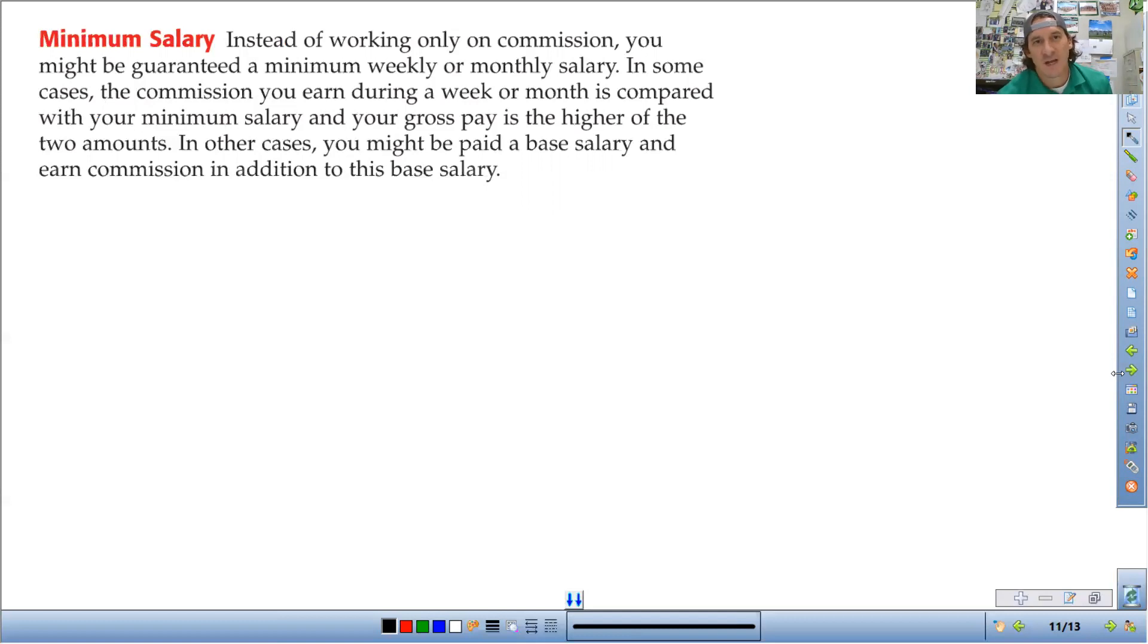All right, so there are jobs that work with commission and a salary. So you might be paid a minimum salary. So instead of working only on commission, you could be guaranteed a minimum weekly or monthly salary. And then in some cases, the commission you earn during the week or month is compared with your salary, and your gross pay is higher than the amount. So if you're getting paid a minimum salary, any commission you work is on top of that. That's what we're going to talk about here.